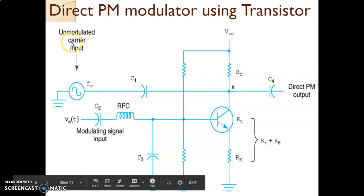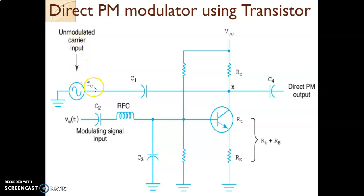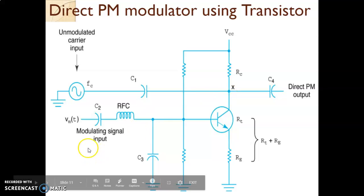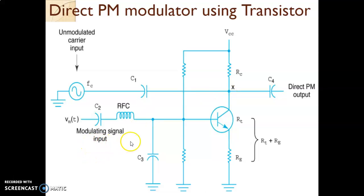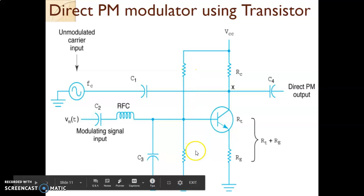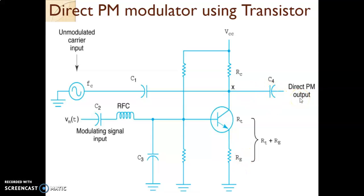There is an unmodulated carrier present with a frequency of FC, connected to capacitor C1 and to point X. Point X has significance here and is marked. The modulating signal is applied at the base of the transistor through capacitor C2. There is a voltage divider biasing of R1 and R2 applied to this transistor. RC and RE are the collector and emitter resistors, and the phase modulated output is available at point X.